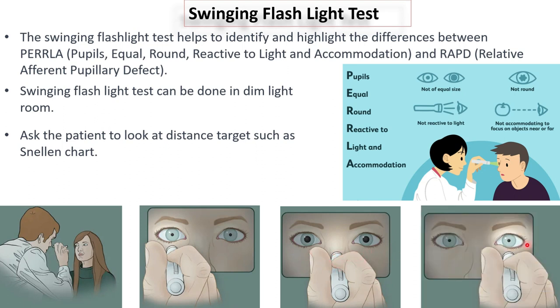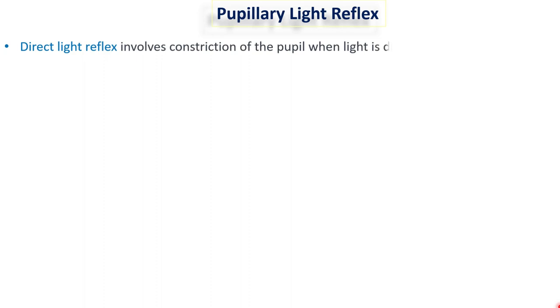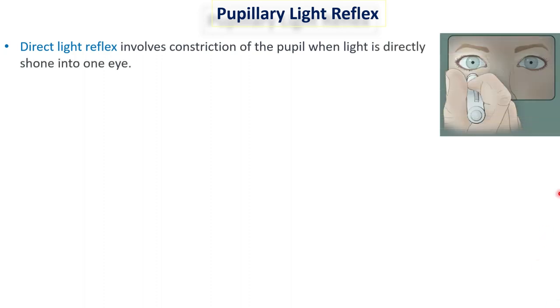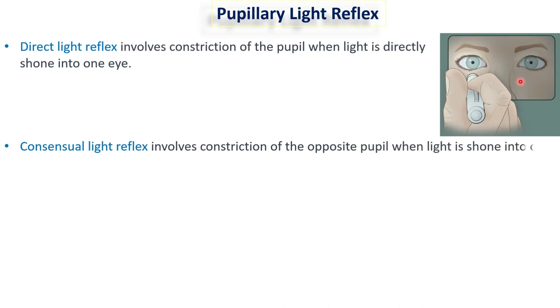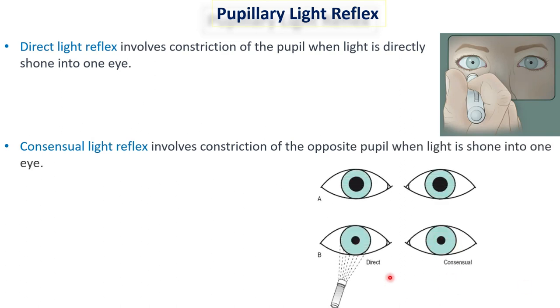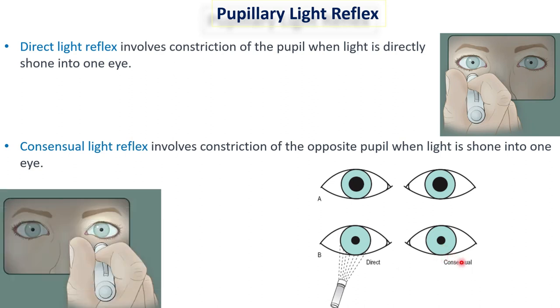There are two types of light reflexes: direct light reflex and consensual light reflex. Direct light reflex occurs when shining a torchlight on one eye causes the pupil to constrict in the same eye. Consensual light reflex occurs when shining a light on one eye causes the pupil to constrict in the other eye. Both reflexes react very quickly when you shine the torchlight on the pupil.